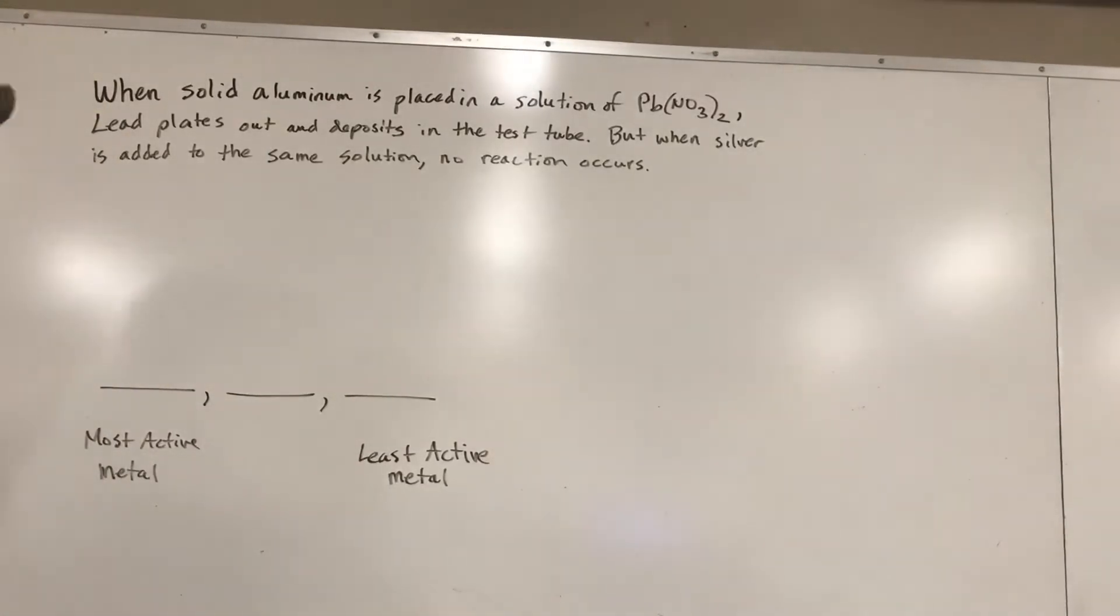This says when solid aluminum is placed in a solution of lead nitrate, lead plates out and deposits in the test tube. But when you try the same thing with silver and that same solution of lead nitrate, no reaction occurs. What we want to do is analyze this in a way where we can tell which one of these metals is the most reactive and which one is the least reactive.